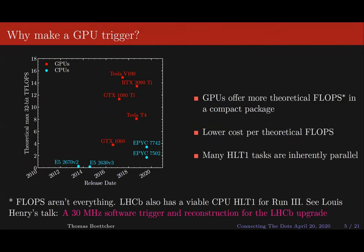Why would you want to run this on GPUs? GPUs offer more theoretical flops in a compact package. Top-end consumer GPUs like the RTX 2080 Ti offer around three to four times more flops than top-end CPUs, and this factor becomes an order of magnitude when you talk about cost per theoretical flops — flops per dollar. On top of that, many of the HLT1 tasks we're interested in performing are inherently parallel, so we can take advantage of this increased computing power.